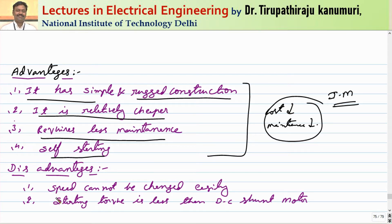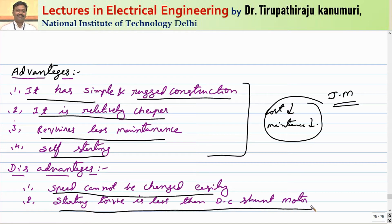The disadvantages of the induction motor are that the speed cannot be changed easily and the starting torque is less than that of DC shunt motors. Wherever high starting torque is needed, induction motors are not suitable. Also, speed control is difficult compared to DC motors. Induction motors are best suited for applications requiring nearly constant speed.